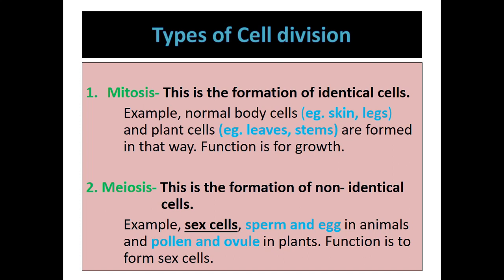Mitosis is the formation of identical cells, meaning the new cells that are formed are identical to the parent cell. In terms of genetics, if the parent cell has 46 chromosomes, then the offspring will also have 46 chromosomes. Mitosis normally takes place in some — not all — types of cells.